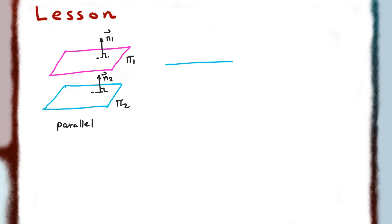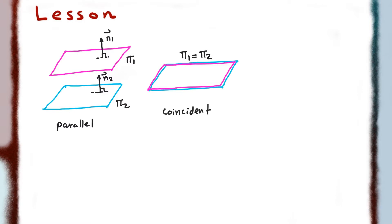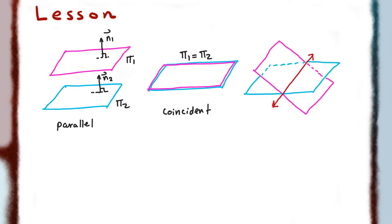When we have two planes, there are three different formations that we can have for them. We can have the two planes being parallel to each other and not touching. We can also have the two planes being coincident, meaning that one plane is directly on top of the other one, meaning that they share all the same points. Planes can also be intersecting, but if they intersect, they cannot intersect at a point — they must intersect at a line.